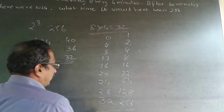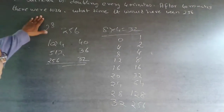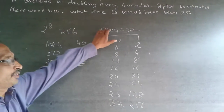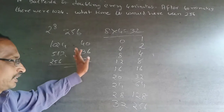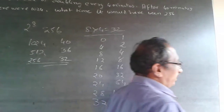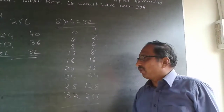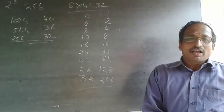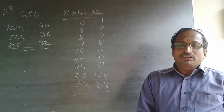So in 32 minutes it will be 256. The answer is 32. The easiest way is just 8 × 4 = 32. Otherwise, this step-by-step table is the most time-consuming approach. Subscribe to my channel — I'll be adding questions every now and then.